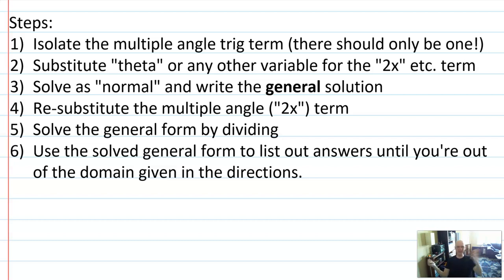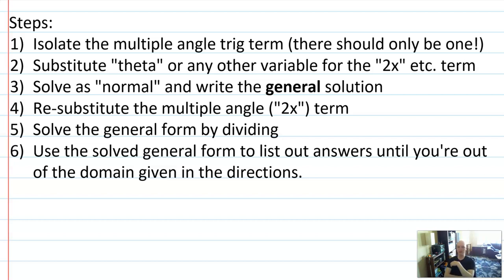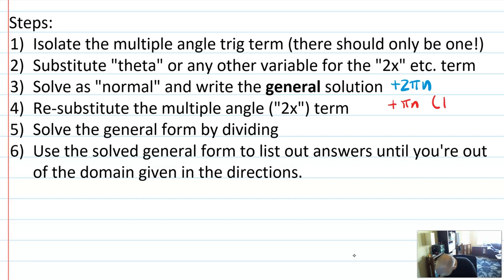You can write theta, or u — like the letter u we sometimes use — or x, though I don't like writing x because I already have a 2x and that's awkward. Use some letter that's not already in the problem. Then solve that rewritten equation and write out the general solution — plus 2πn for sine and cosine, or plus πn for tangent.